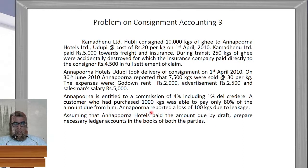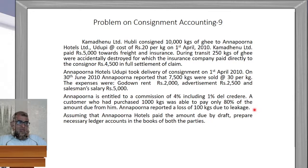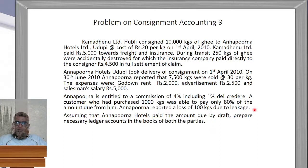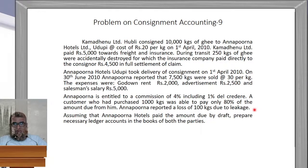Annapurna reported a loss of 100 kgs due to leakage. Leakage is a normal loss — it is a natural occurrence for a liquid item like ghee. So 100 kgs is treated as normal loss.